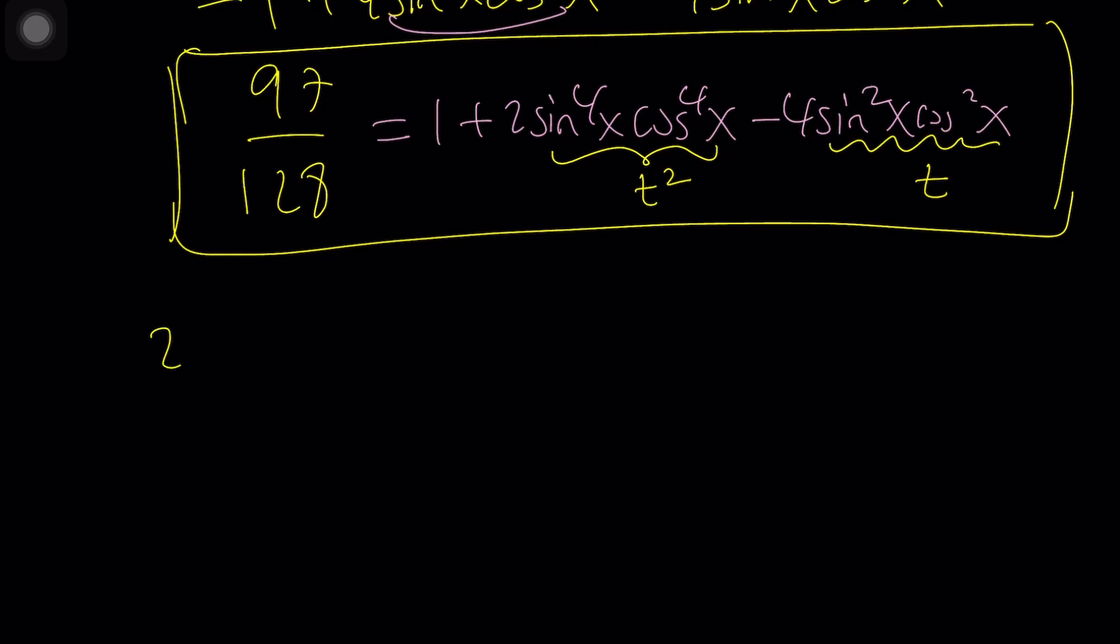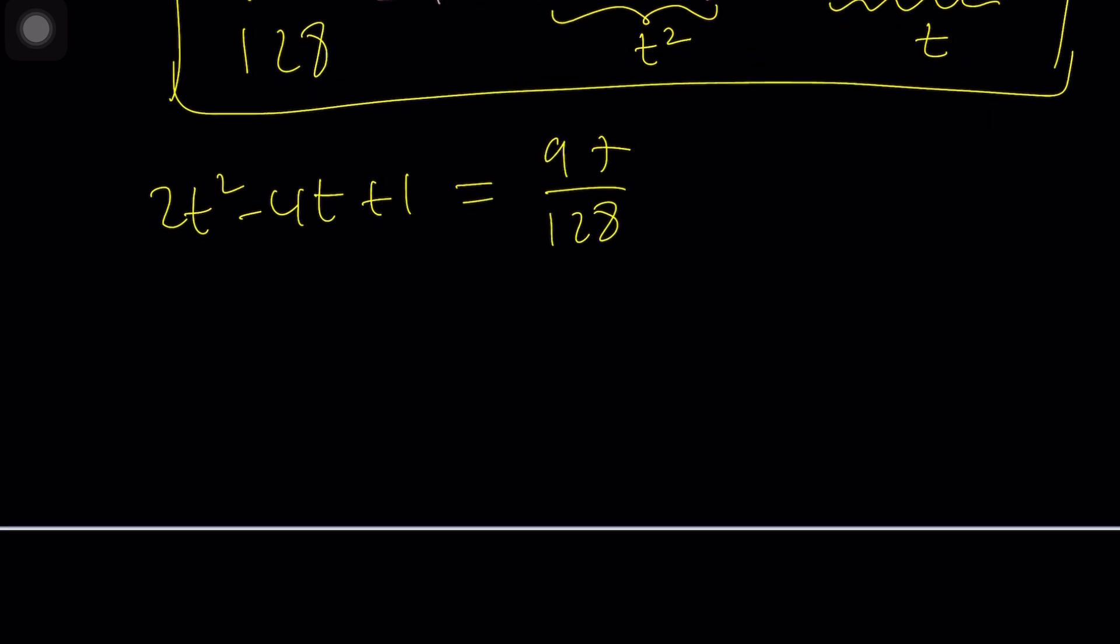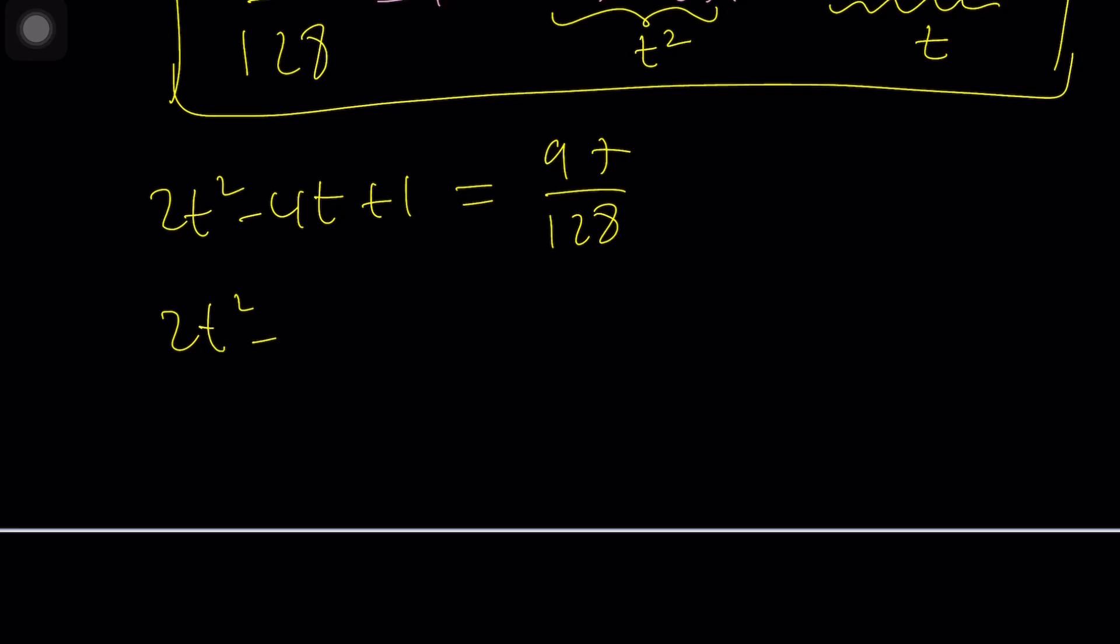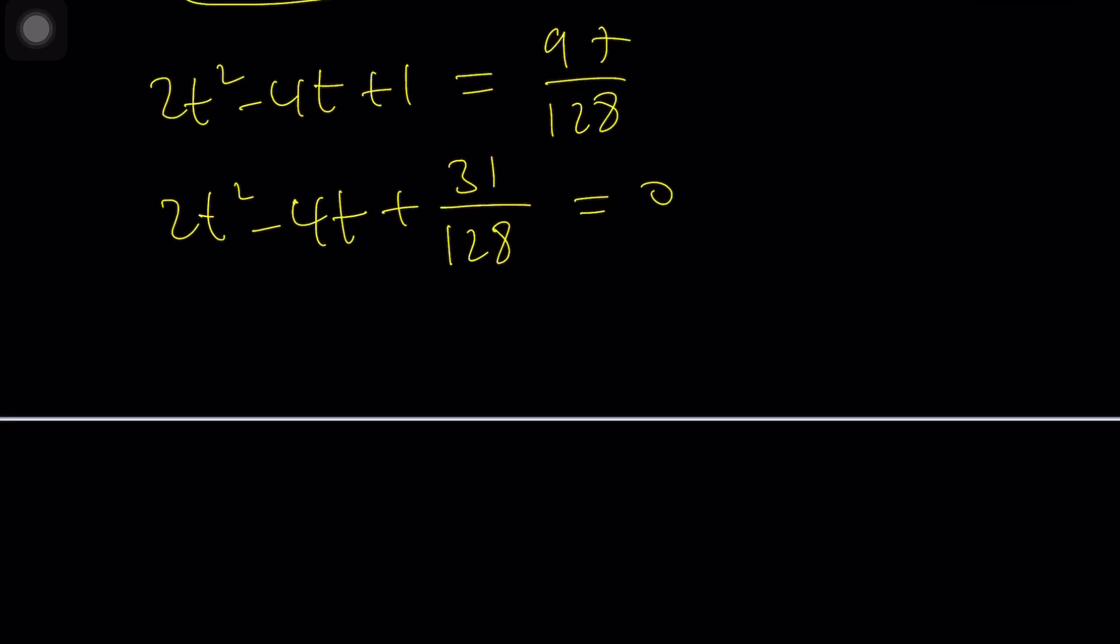So we can write this as 2t squared minus 4t plus 1 equals 97 over 128. If we subtract that from 1 that'll be 1 minus that. So the difference between these two things is 31 over 128 and that's equal to 0.